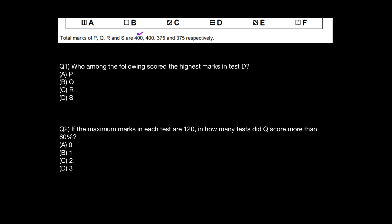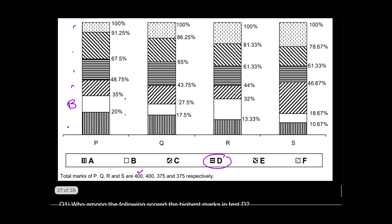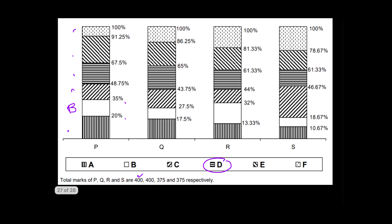The first question says: 'Who among the following scored the highest marks in test D?' In test D we're going to focus on these horizontal lines. We'll go up and check the horizontal lines part. We will be checking this percentage, this percentage, this percentage, and this percentage. What are we going to compare? We're going to compare all the percentages over here.